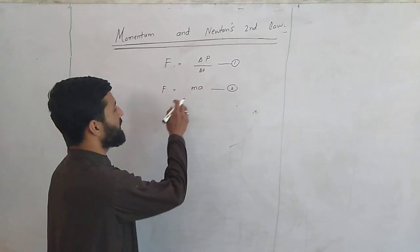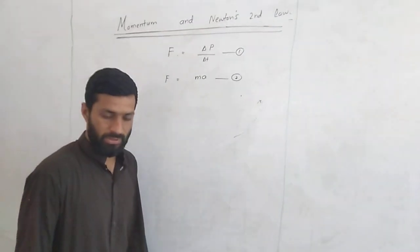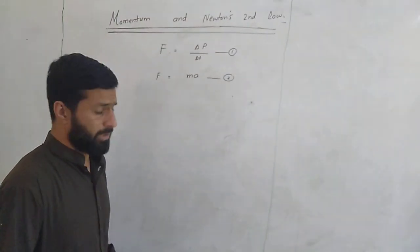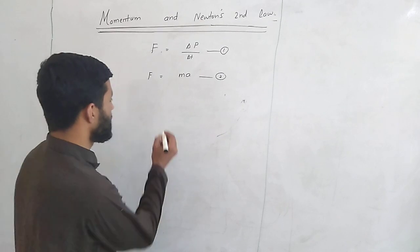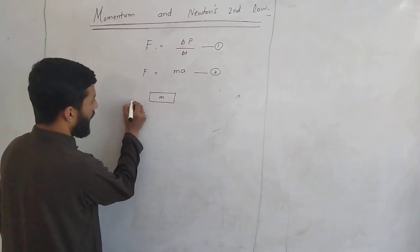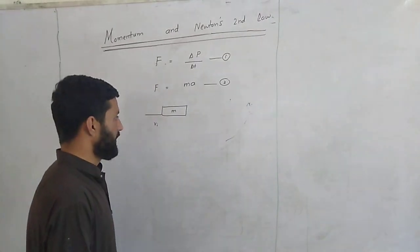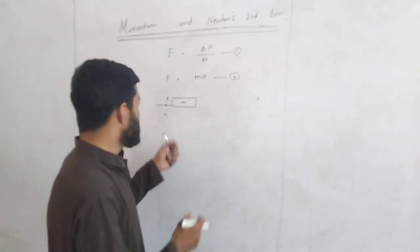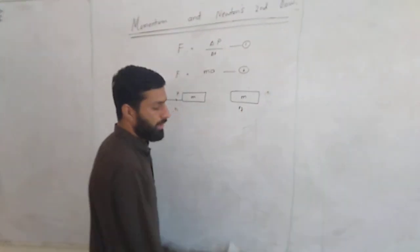Whenever force is applied on a body that has mass M, acceleration A is produced. Whenever acceleration is produced in a body, its velocity changes from initial velocity to final velocity. Let us consider a body of mass M whose velocity is VI, which represents initial velocity. Whenever force is applied on this body, the body's velocity changes from VI to VF.